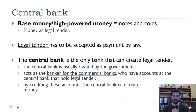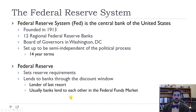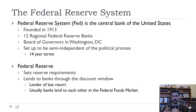In the United States, the central bank is called the Federal Reserve System. It's about 100 years old — it was founded in 1913. It's made up of both 12 regional banks around the country, as well as the Board of Governors in Washington, D.C. It's set up so that it is at least semi-independent of the political process.